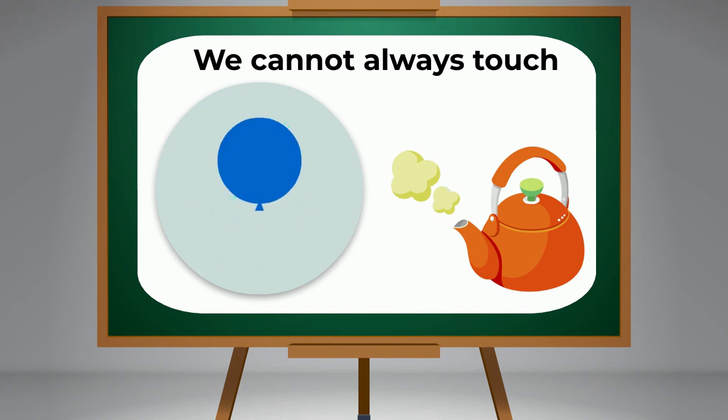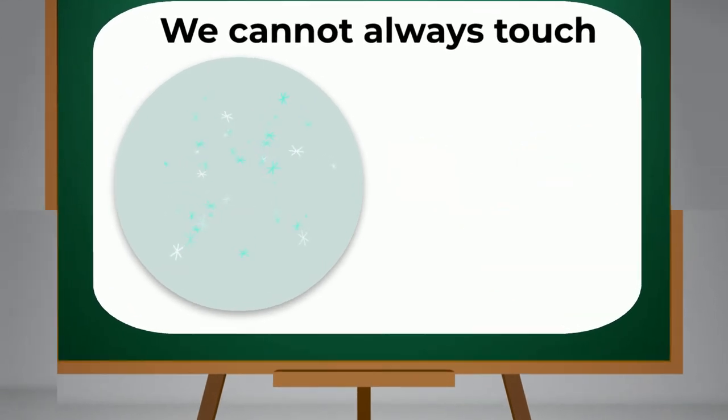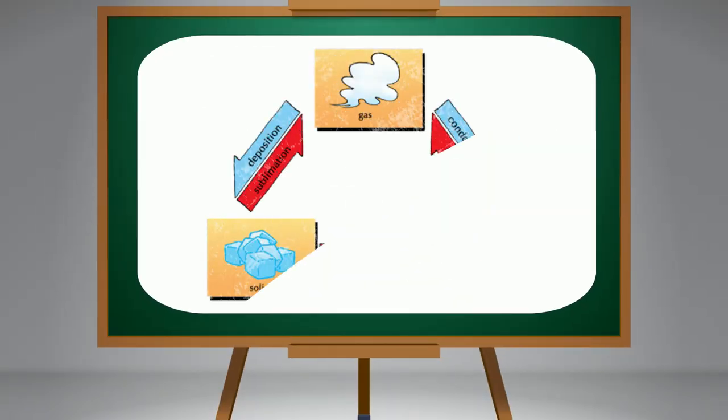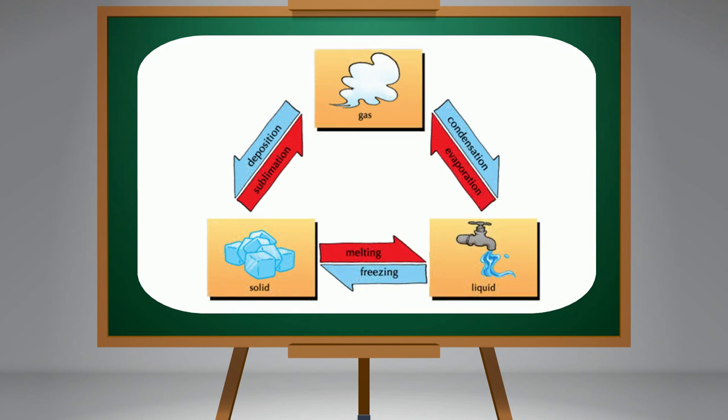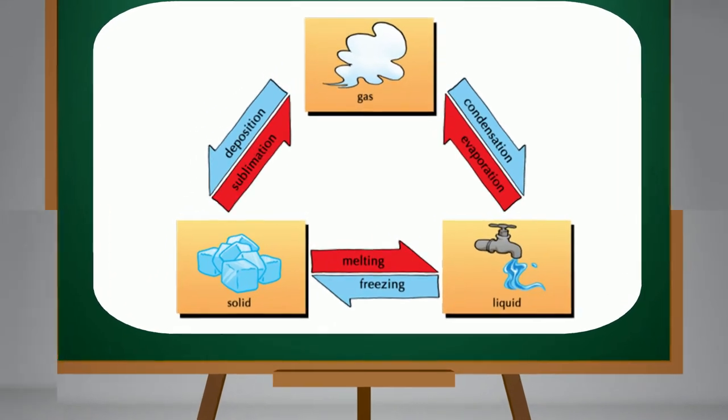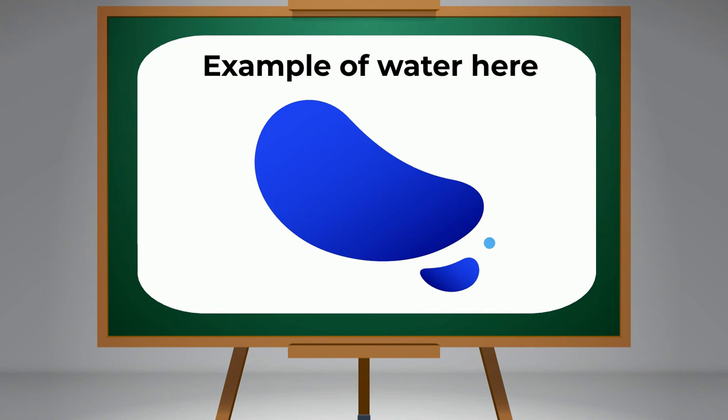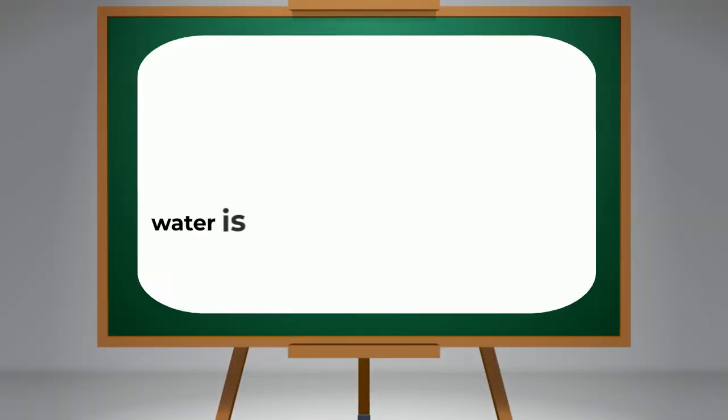Can an object change its original state? Some objects can change from one state to another when they are in a particular environment. We can take the example of water here. Basically, water is a liquid.